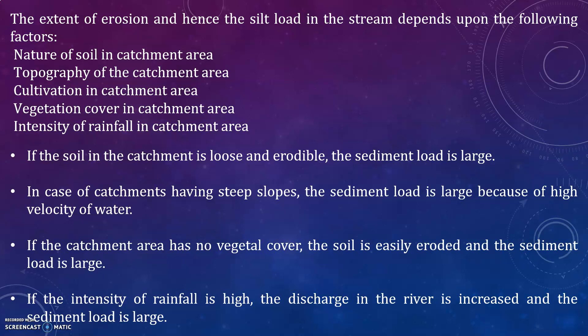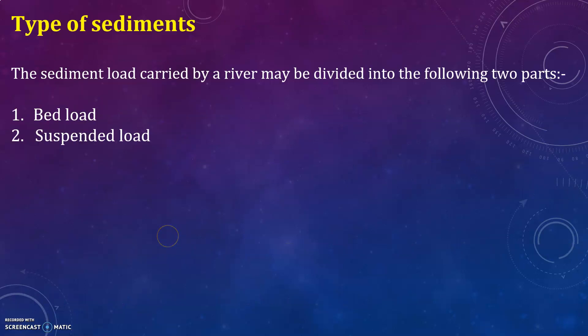Steep slopes give rise to high velocities and erode the subsoil easily. Similarly, higher intensity of rainfall causes greater runoff and more erosion. If the catchment area has sufficient vegetation cover, high velocities are checked and erosion is very much reduced. Areas having poor or practically no vegetation cover are productive of more silt, and rivers or tributaries passing through such areas carry more silt load, causing quick silting of the reservoir.